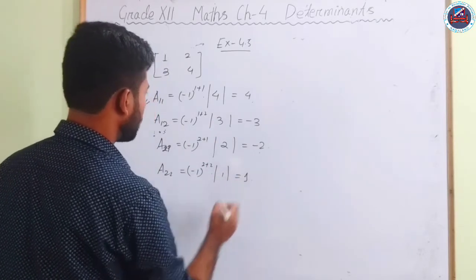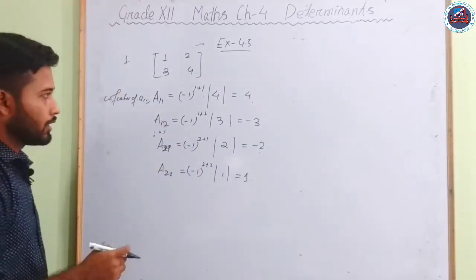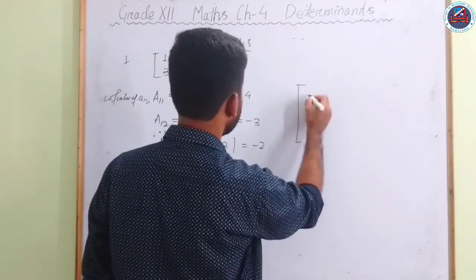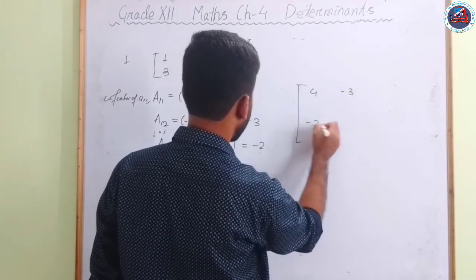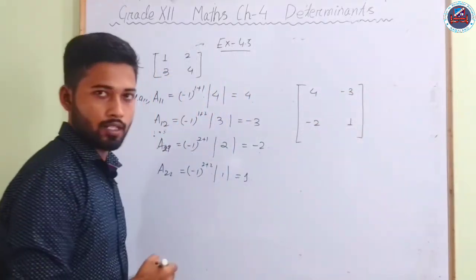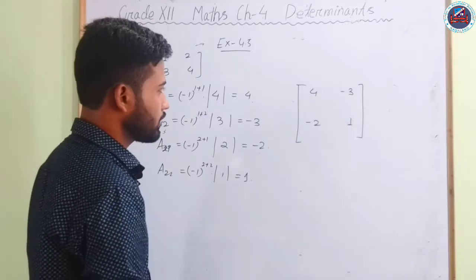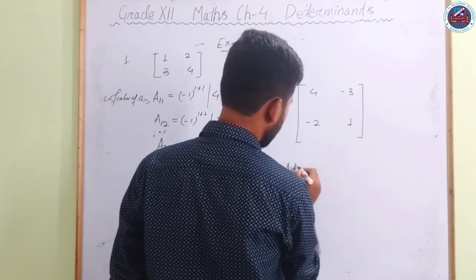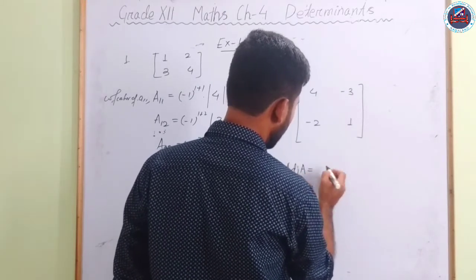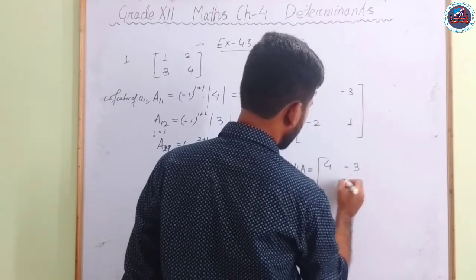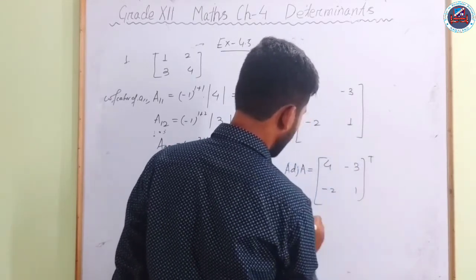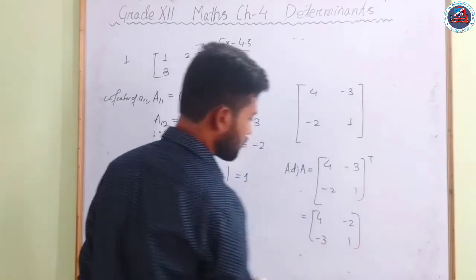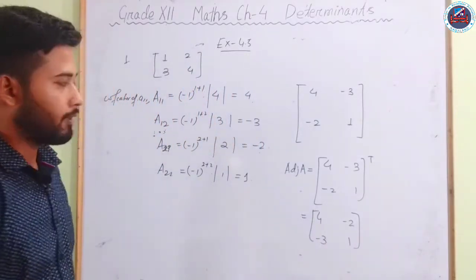Using these cofactors, the cofactor matrix is [[4, −3],[−2, 1]]. The adjoint of A is the transpose of this cofactor matrix, giving adj(A) = [[4, −2],[−3, 1]] by interchanging rows and columns.